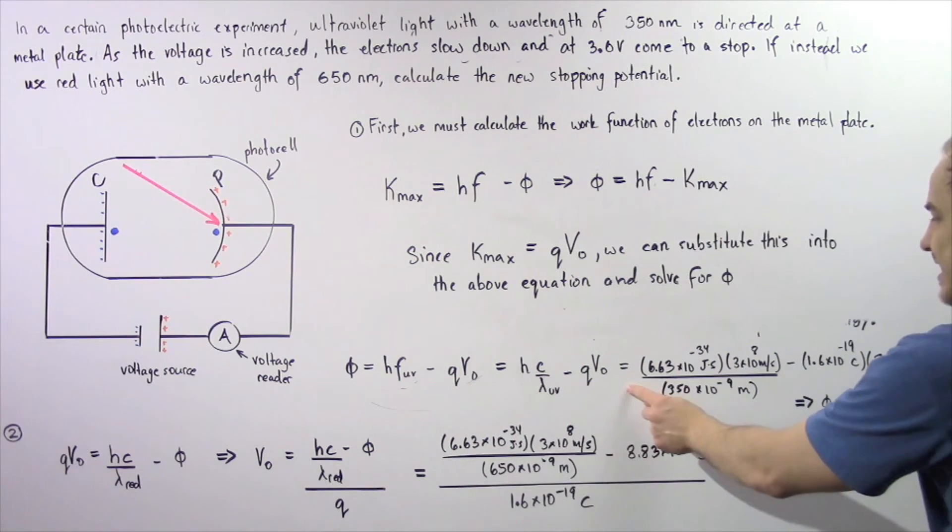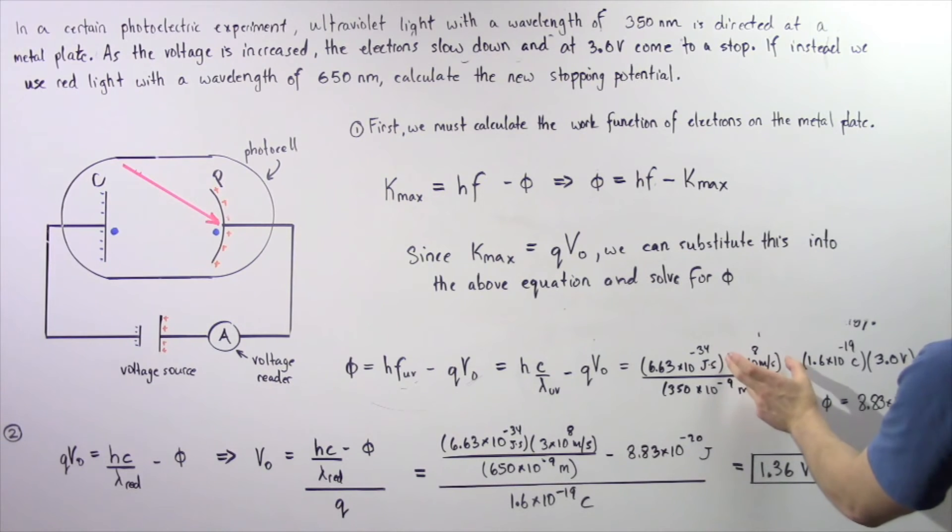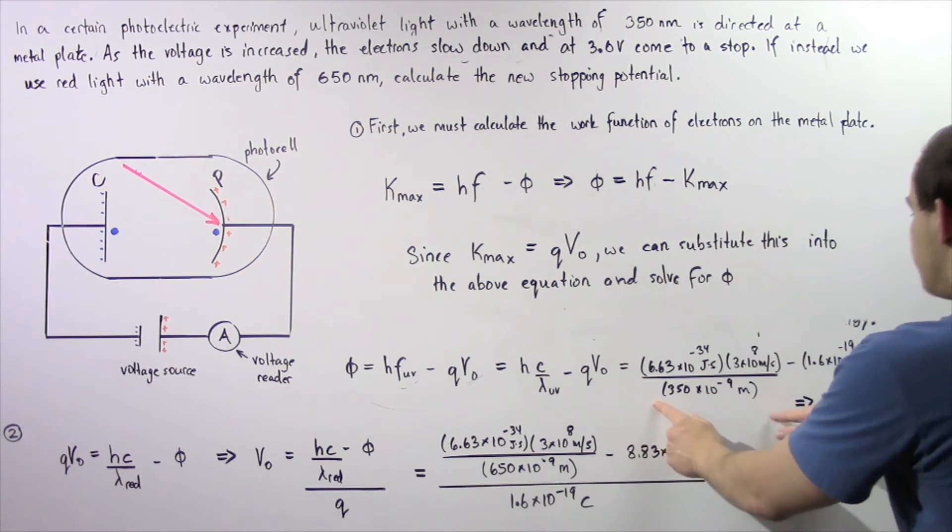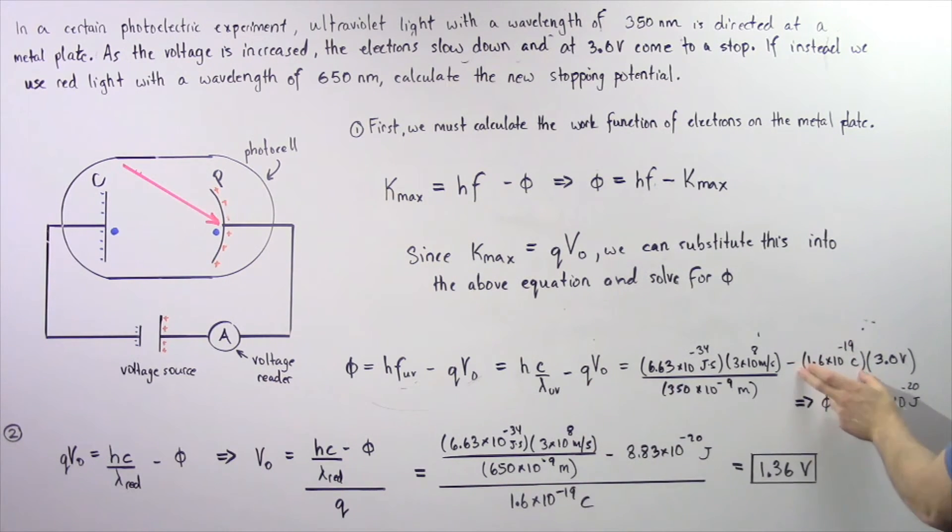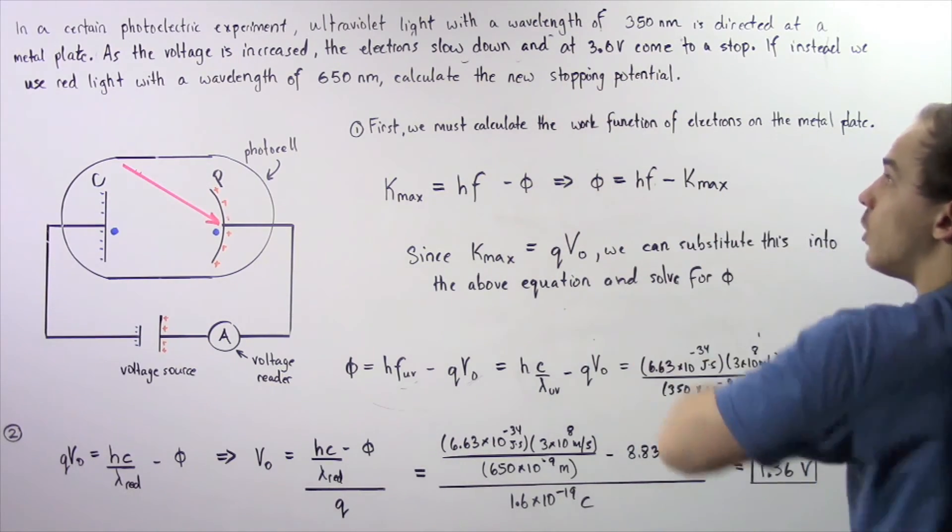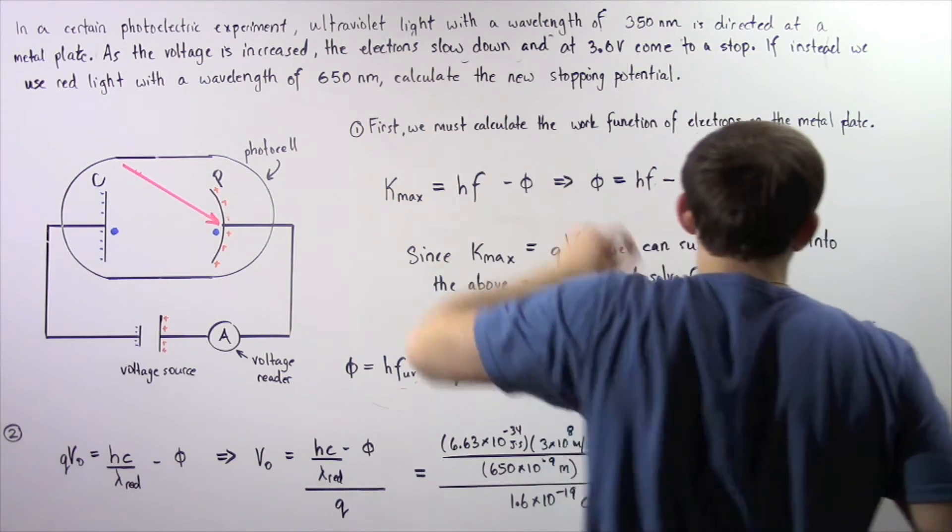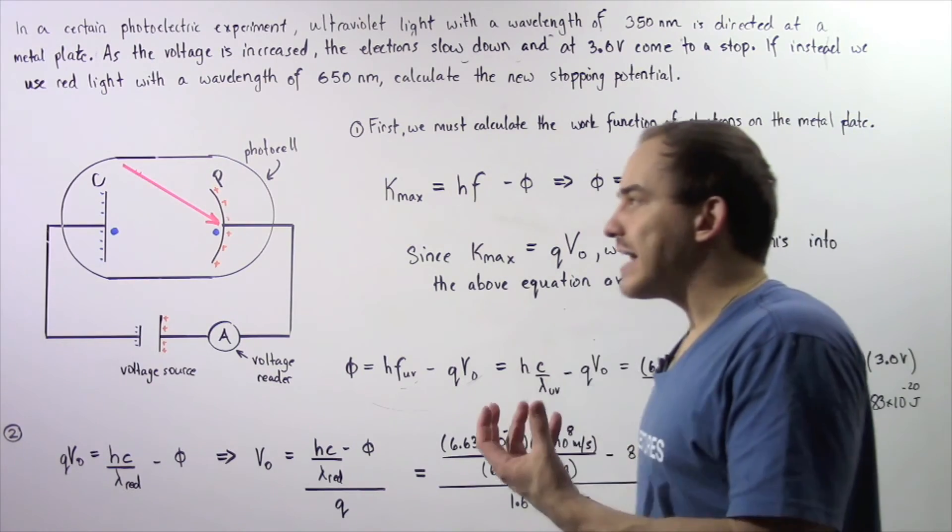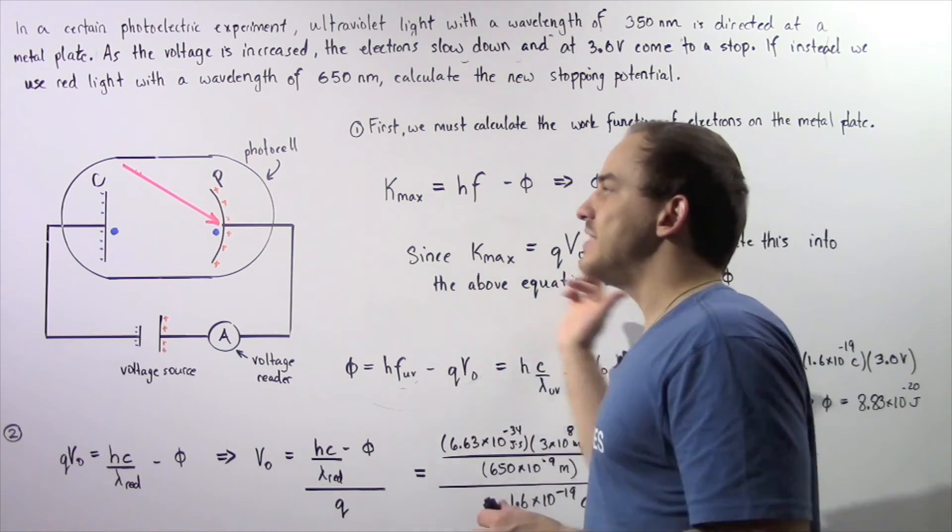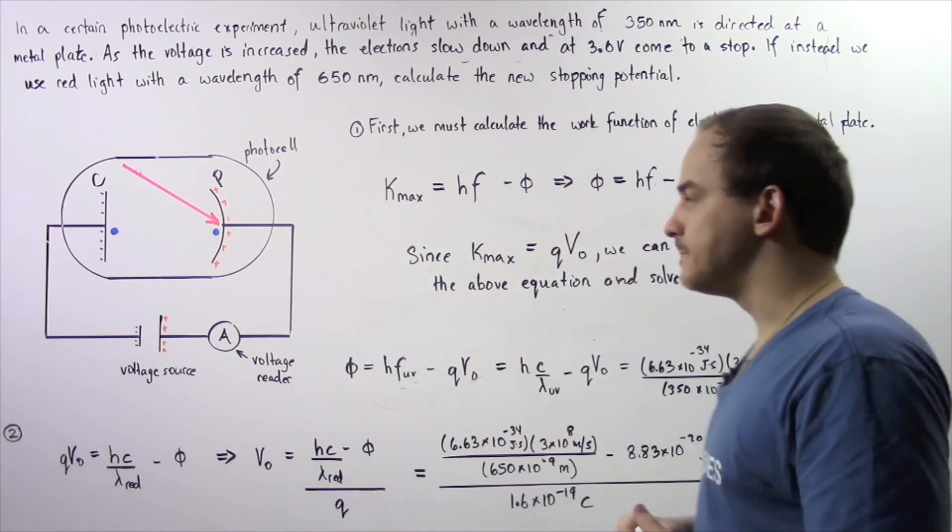The work function is equal to Planck's constant multiplied by the speed of light divided by the wavelength of UV light minus the charge on the electron multiplied by the stopping voltage when using UV light. And we see that the work function is equal to about 8.83 times 10 to the negative 20 joules. So this is the quantity of energy that the electron must gain to be ejected from plate P.